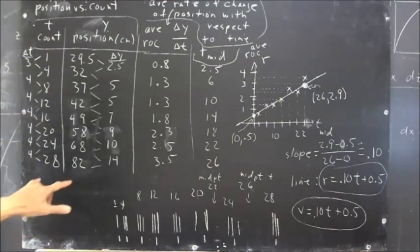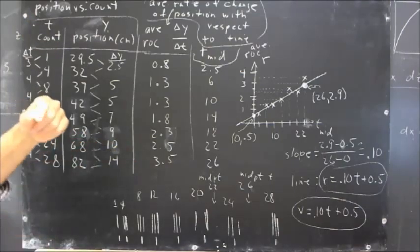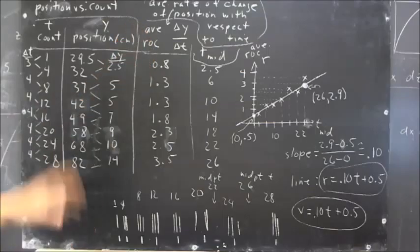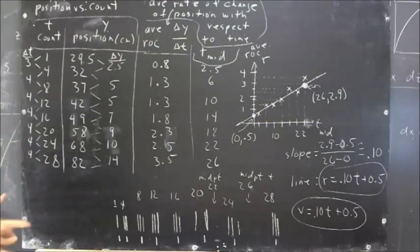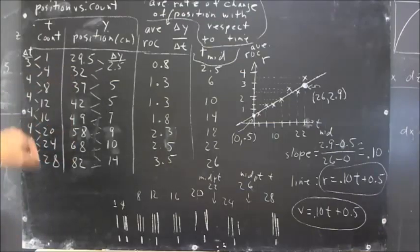position versus clock time, position, clock time, you'll find that we have an upward curvature to that graph, making it plausible that there's a quadratic function that fits this data. And I would recommend that you just take this data, confirm that these are the average rates of change.